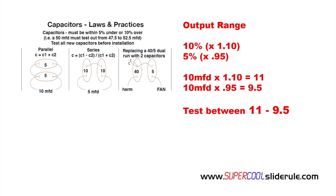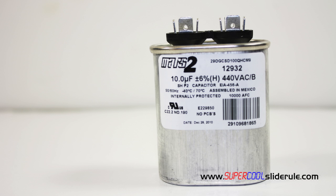Many people have heard that a capacitor can be tested with an older analog tester looking for a spike. Please save yourself the trouble and do not use this method. Also, a capacitor should be smooth and uniform on the top and sides. If there is any bowing or bulging evident of any kind, the capacitor is bad and must be replaced.